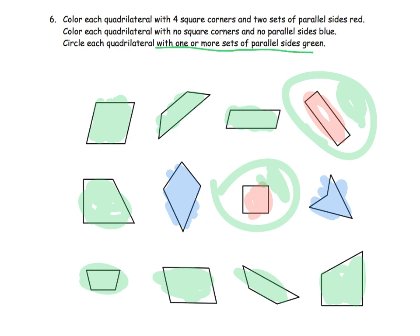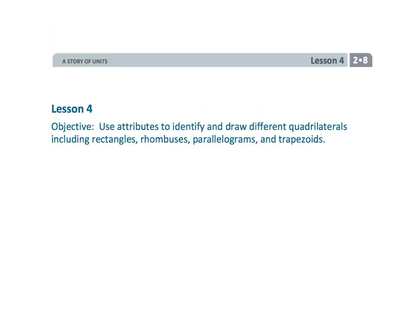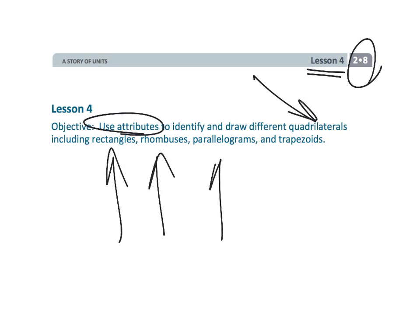These two figures have been shaded in twice, because they have one or more sets of parallel sides. That wraps up second grade module 8 lesson 4 — using our attributes to draw a whole bunch of different quadrilaterals: things like rectangles, rhombuses, parallelograms, and trapezoids.